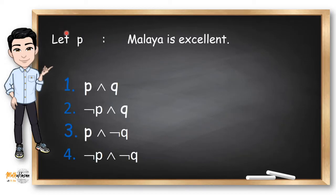Let's have this example. Let P be the proposition, Malaya is excellent. While Q is the proposition, Malaya is virtuous. Now, how do we write these symbols in English? So if we're going to translate P and Q to English, it's Malaya is excellent and virtuous. In number two, we read it as not P and Q. But if we're going to translate it in English, Malaya is not excellent yet she is virtuous. Number three, P and not Q. In English, Malaya is excellent but not virtuous. In number four, it's not P and not Q. So in English, Malaya is not excellent and not virtuous.